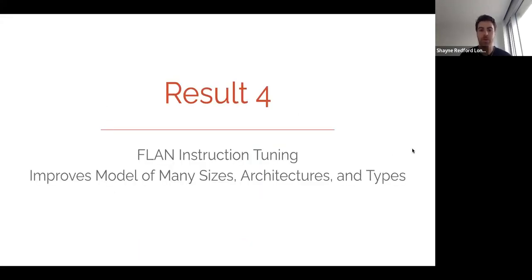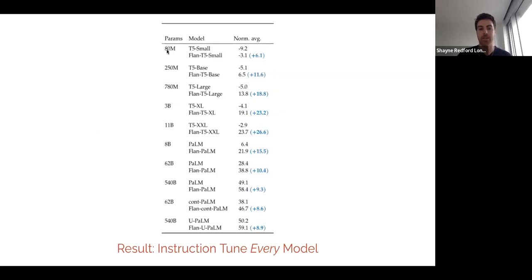The fourth result shows that Flan instruction tuning improves models of many different sizes, architectures, and types. So here we see a variety of models with different sizes. And so if we look at this row here, this is the PaLM 540 billion parameter model. And averaging over a set of held-out tasks, which I believe includes MMLU and BigBench Hard, it gets about 49%. But comparing that to Flan-PaLM's performance, which is 58%, there's a 9% improvement highlighted in blue.